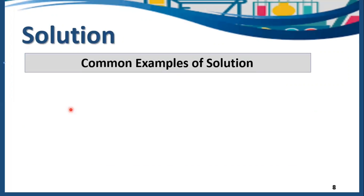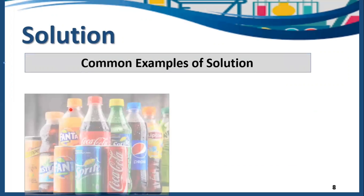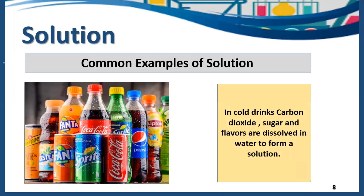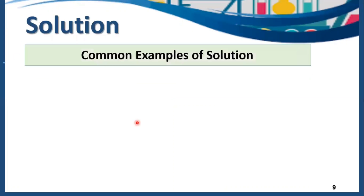Then we have some common examples of solution. Have a look at these cold drinks. In these cold drinks, carbon dioxide, sugar, and flavors are dissolved in water in order to form a solution. Now carbon dioxide, sugar, and flavors are present in a smaller quantity, and water is acting as a solvent here because it is in the larger quantity. And it's a uniform solution.